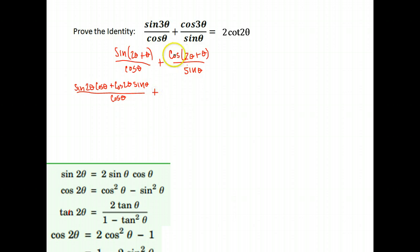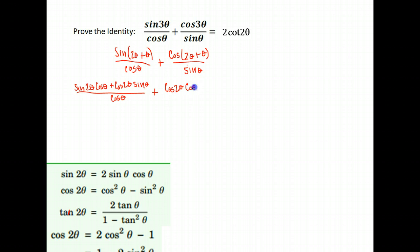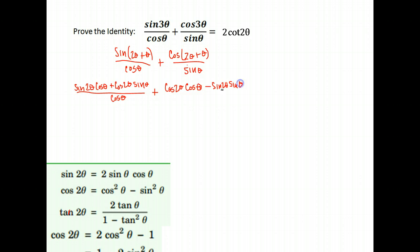Now let's expand our cosine of 2θ plus θ. The sum of cosines goes like this: we do the cosine of the first angle times the cosine of the second angle — cosine 2θ times cosine θ — then we put the opposite sign, so minus, and we do the sine of those two angles multiplied: sine 2θ times sine θ. The entire thing is over sine θ.